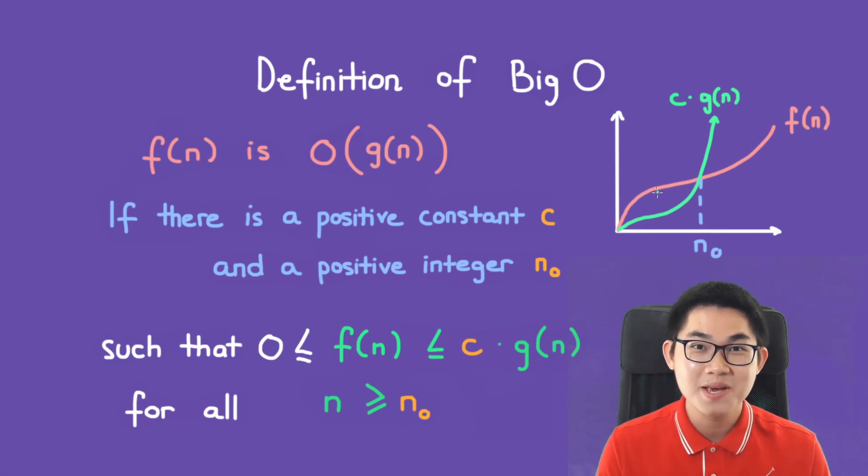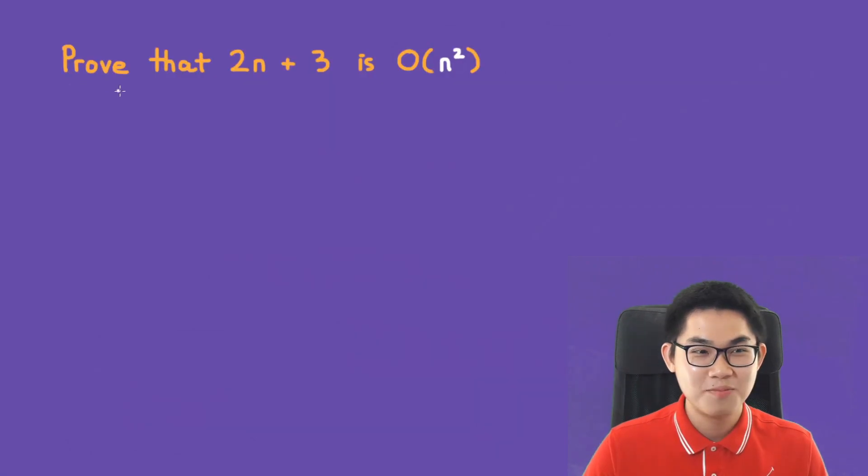Prove that 2n plus 3 is O(n²). And you might say, wait a minute, we just showed that 2n plus 3 is O(n). How can it be O(n²)?